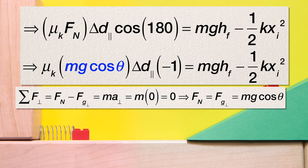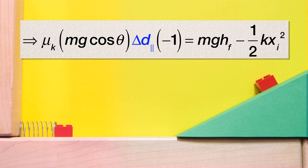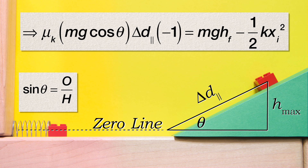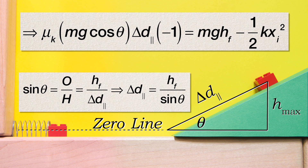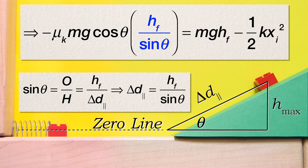We can also substitute in negative 1 for the cosine of 180 degrees. Other than the height final, which is the maximum height we are solving for, the only variable we do not have in this equation is the displacement in the parallel direction. So we can draw a triangle and get the sine of the incline angle equals opposite over hypotenuse. Opposite the incline angle is the height final, and the hypotenuse is the displacement in the parallel direction. Rearranged, the displacement in the parallel direction equals the height final divided by the sine of the incline angle, which we can substitute back into the equation.